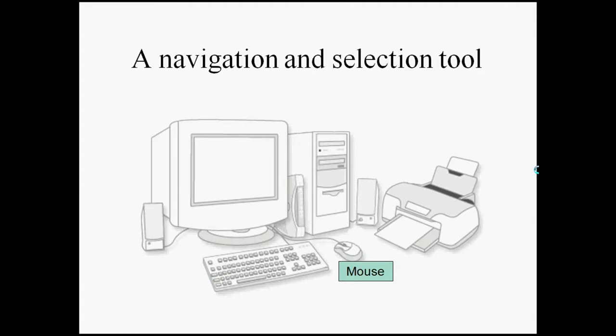Then there's the mouse. The mouse is what we call a navigation and selection tool. It allows you to move a little cursor onto different things on the screen, and by pressing a button on the mouse, to select them or make something else happen on the screen. It's called a mouse because it's got a little round body with a long tail connecting it to the computer, although these days sometimes it's wireless so there's no tail.